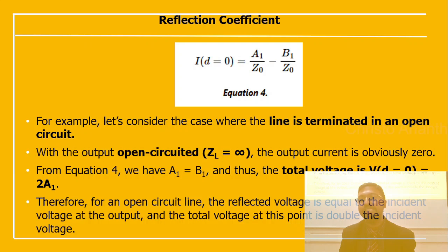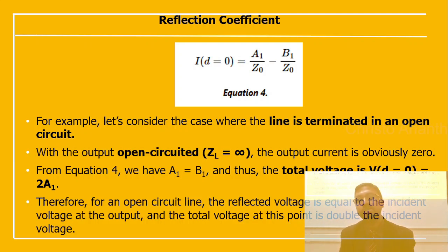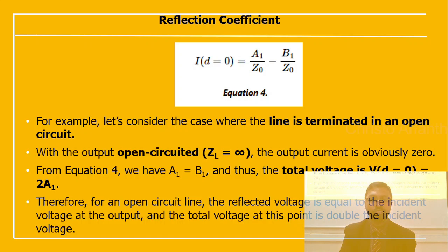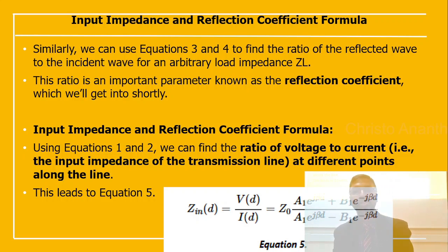For an open circuit line where load impedance ZL equals infinity, the output current is 0, giving A₁ = B₁. The total voltage at d = 0 is then 2A₁ — twice the incident voltage. So for an open circuit, the reflected voltage equals the incident voltage at the output, and the total voltage is double the incident voltage. Using equations 3 and 4, we can find the ratio of the reflected wave to the incident wave for an arbitrary load impedance ZL — this ratio is the reflection coefficient.